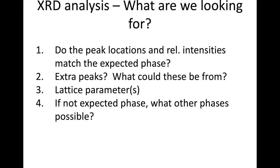For the analysis, what we're looking for is the peak location — the two-theta value — and also the relative intensity, meaning how large the peaks are. Both of those are important. The peak location tells you about the d-spacing, the spacing of certain planes. The relative intensity can tell you some information about the structure as well. We want to look at our peak locations and relative intensities and see if we can match them with other phases in the literature for YBCO.